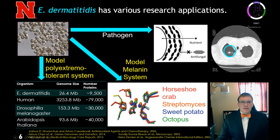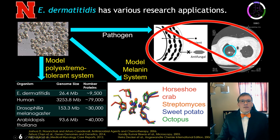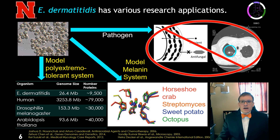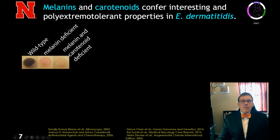Exophiala has about 10,000 proteins, whereas humans have about 80,000 proteins, which makes it a more practical system for study of melanogenesis. So we decided to pursue both the melanogenesis study route and the model polyextremotolerant system route.